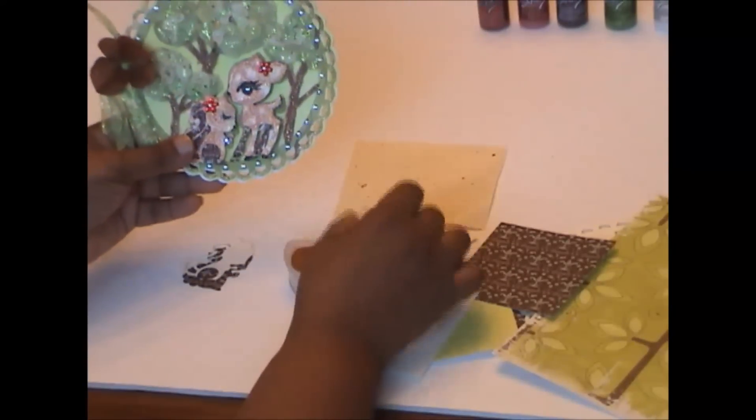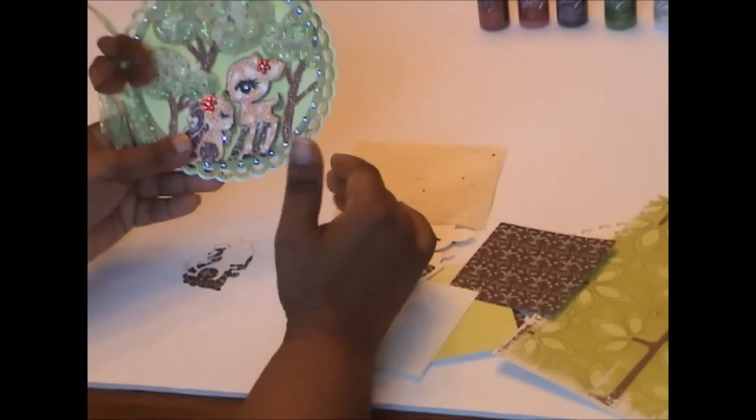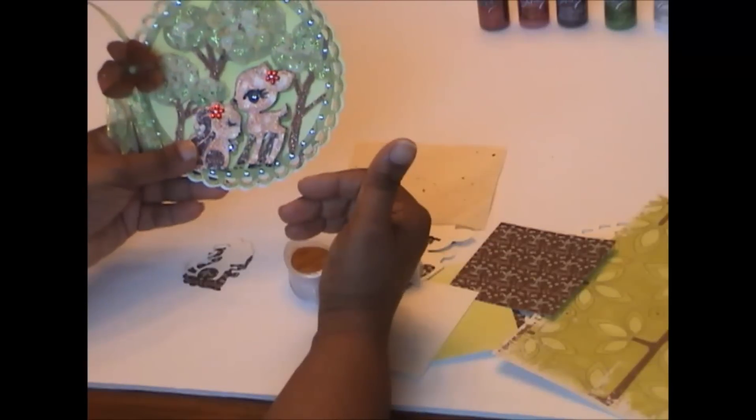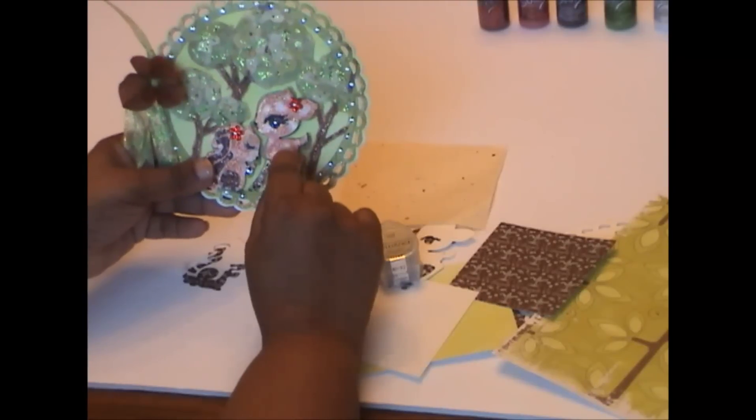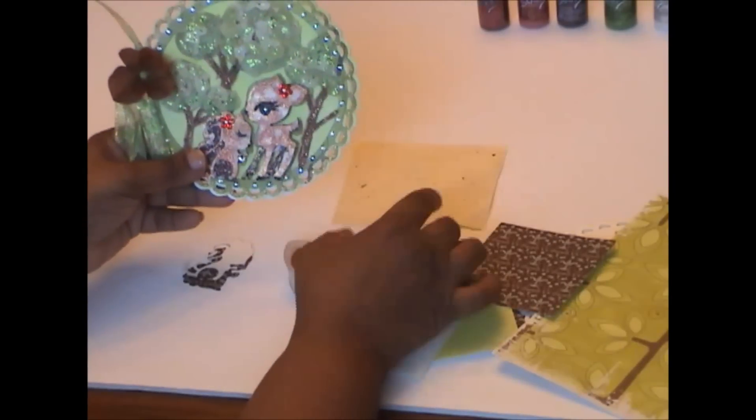The reason I did it this way is either you can do this or you can use your Copic marker if you have the correct color and use a colorless blender to just hold it on a spot and it will create a spot for you.